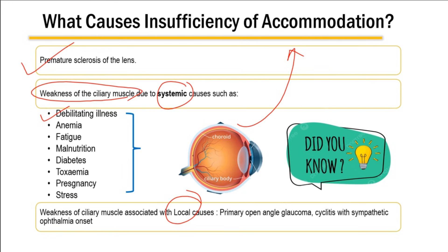Weakness of the ciliary muscle could also be due to increased pressures as seen in primary open-angle glaucoma, or ocular inflammatory conditions affecting the ciliary body, for example sympathetic ophthalmia. In sympathetic ophthalmia, one symptom patients present with is difficulty in near vision tasks.